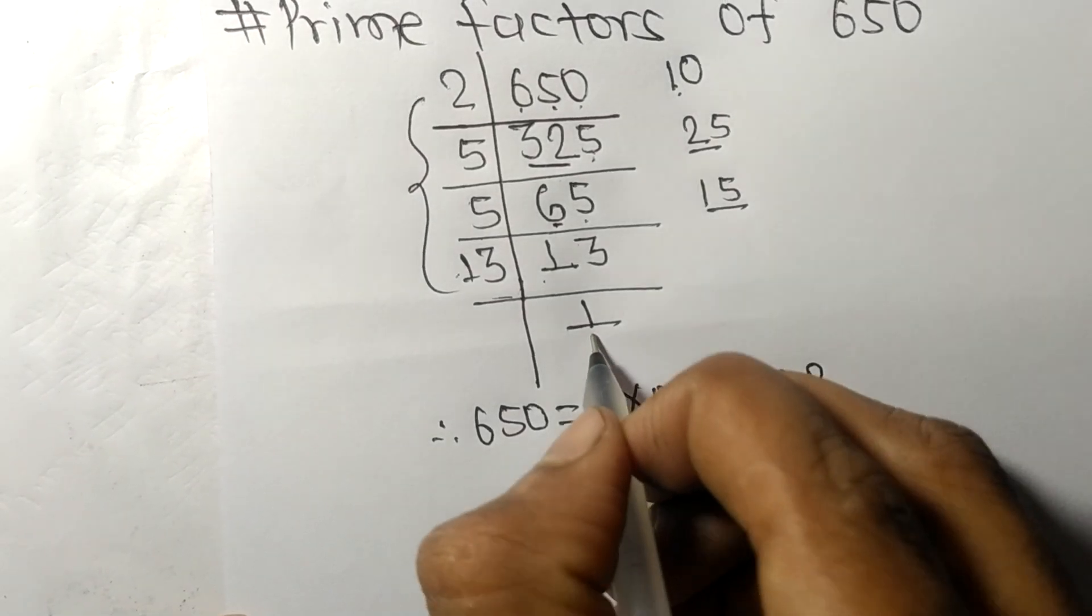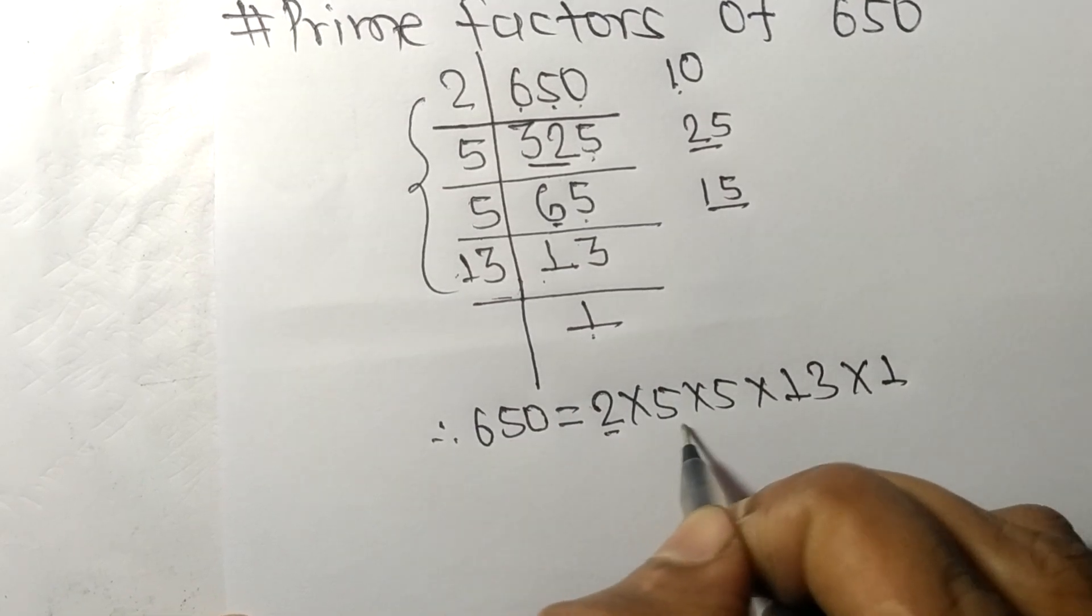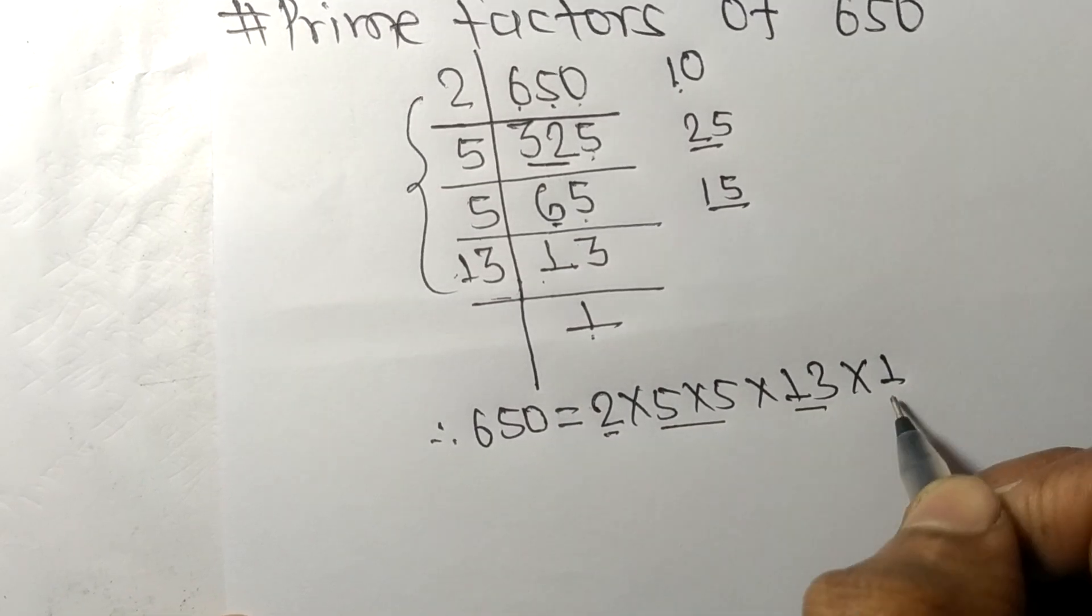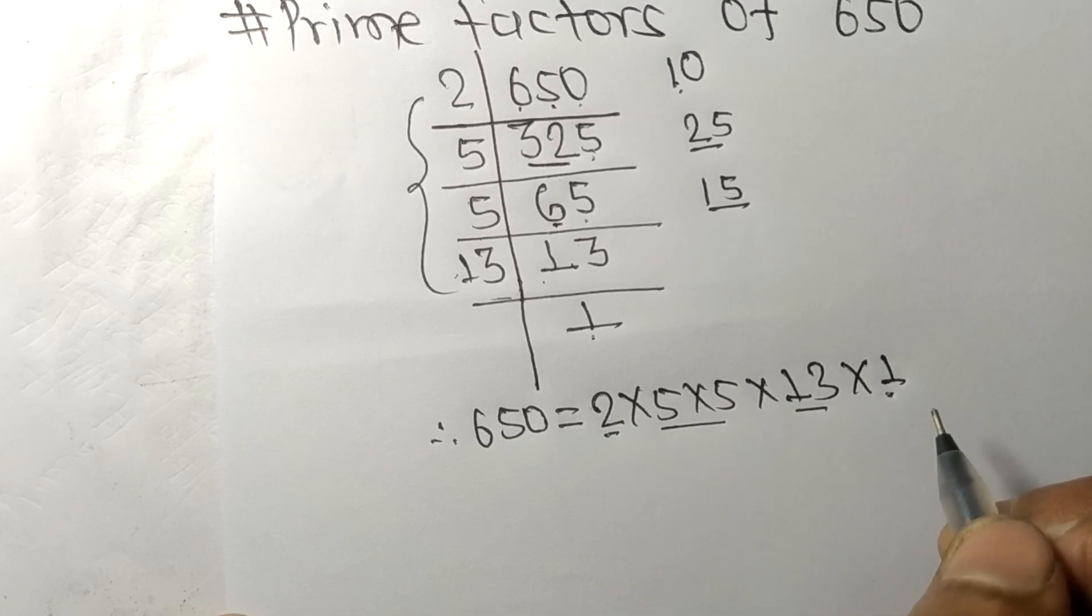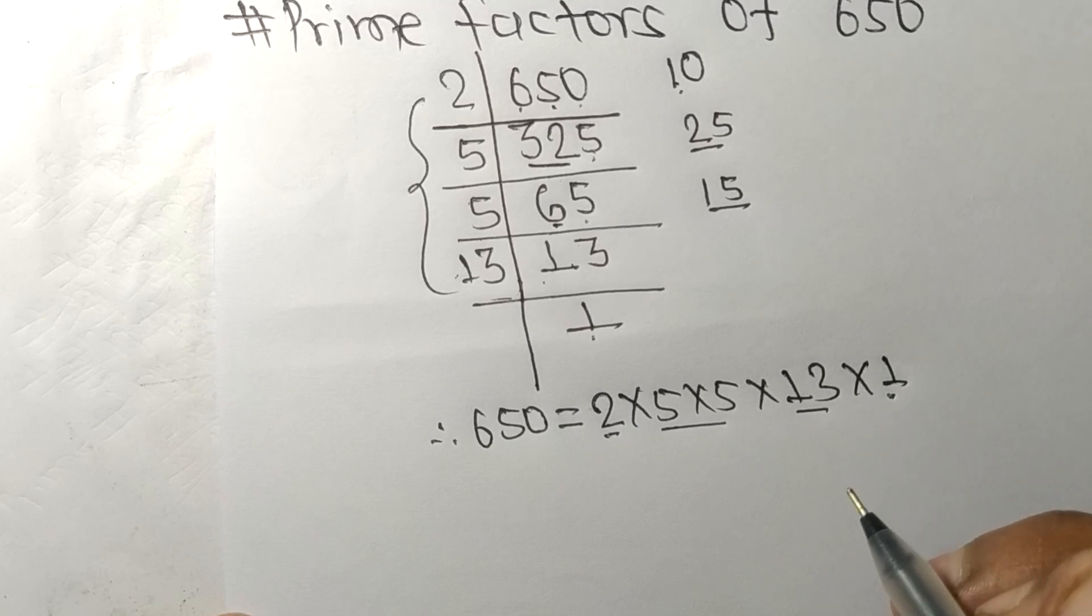So 2, 5, 13, and 1 are the prime factors of 650. That's all for today, and thanks for watching.